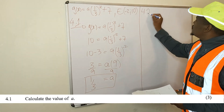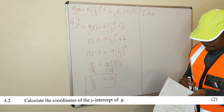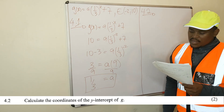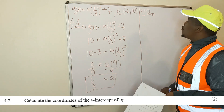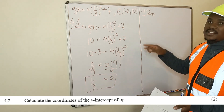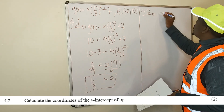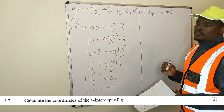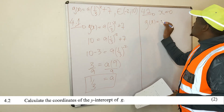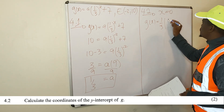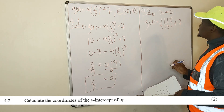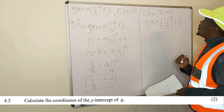Let's go to 4.2: calculate the coordinates of the y-intercept of g. What are the coordinates of the y-intercept of g? If your graph is passing through the y-intercept, we know the x-value is 0. So our x is 0.